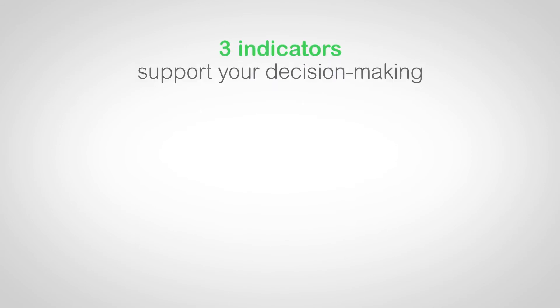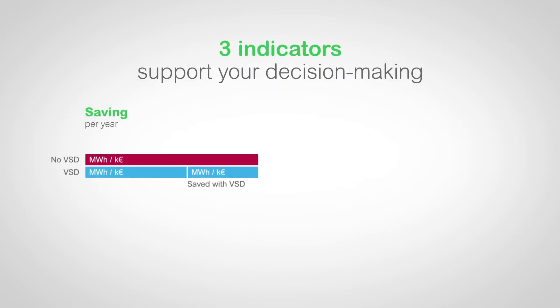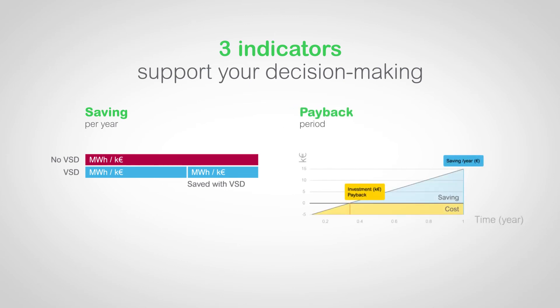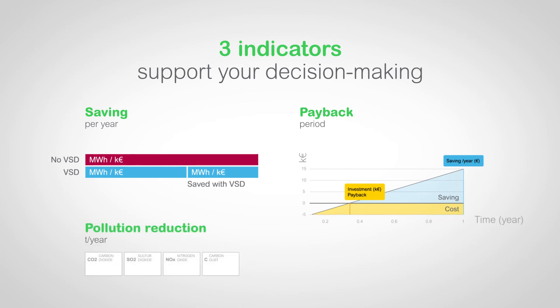The indicators that support your decision-making are: the saving per year, which can be expressed in energy and financial values; the payback period that justifies the variable speed drive investment; and the corresponding pollution reduction.